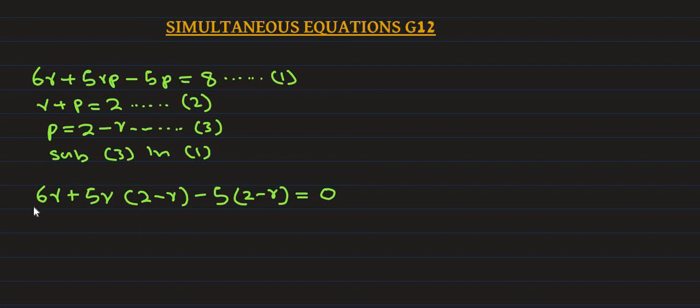Now I will resolve for r. We have 6r plus 5r multiplied by 2 equals 10r. 5r multiplied by negative r equals negative 5r squared. Then negative 5 multiplied by 2 equals minus 10. Negative 5 multiplied by negative r equals plus 5r. That equals 8.